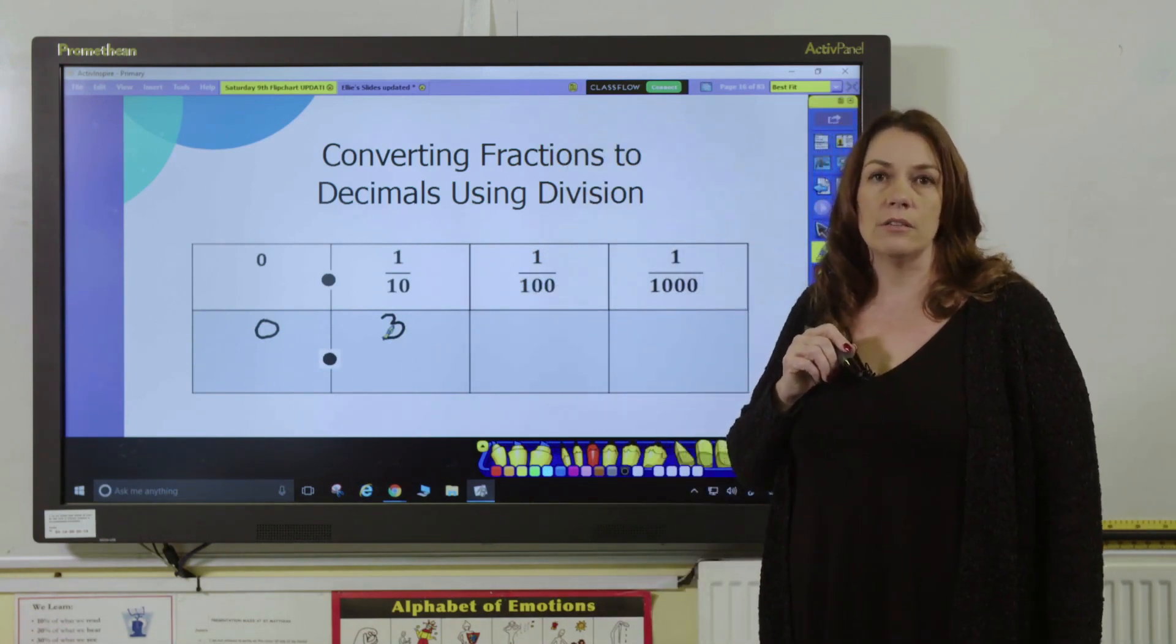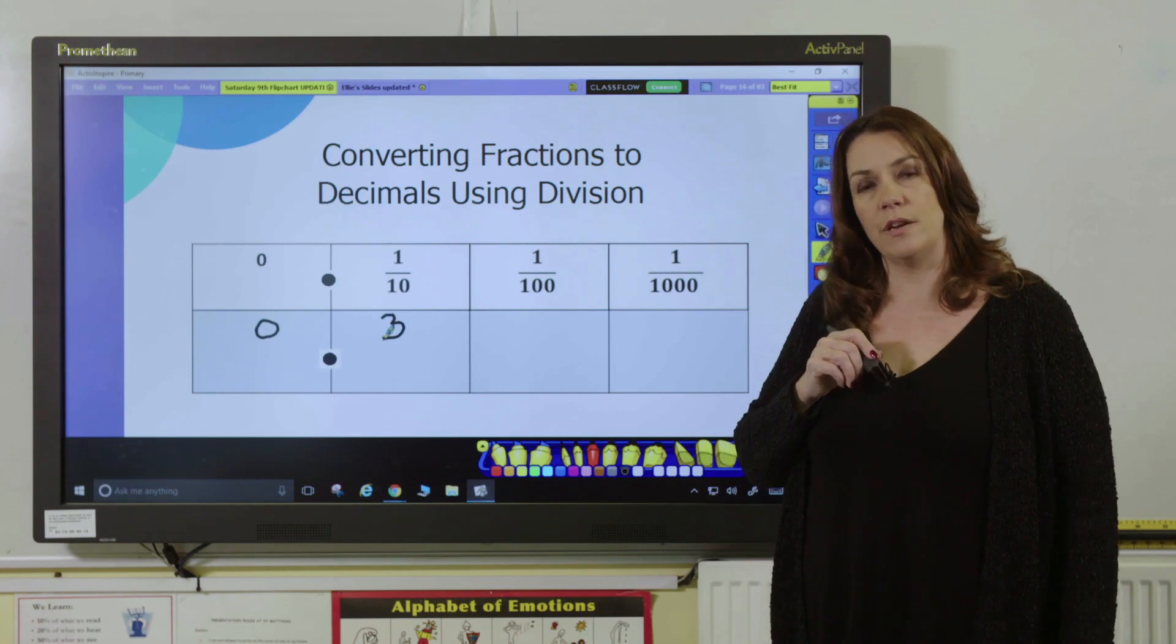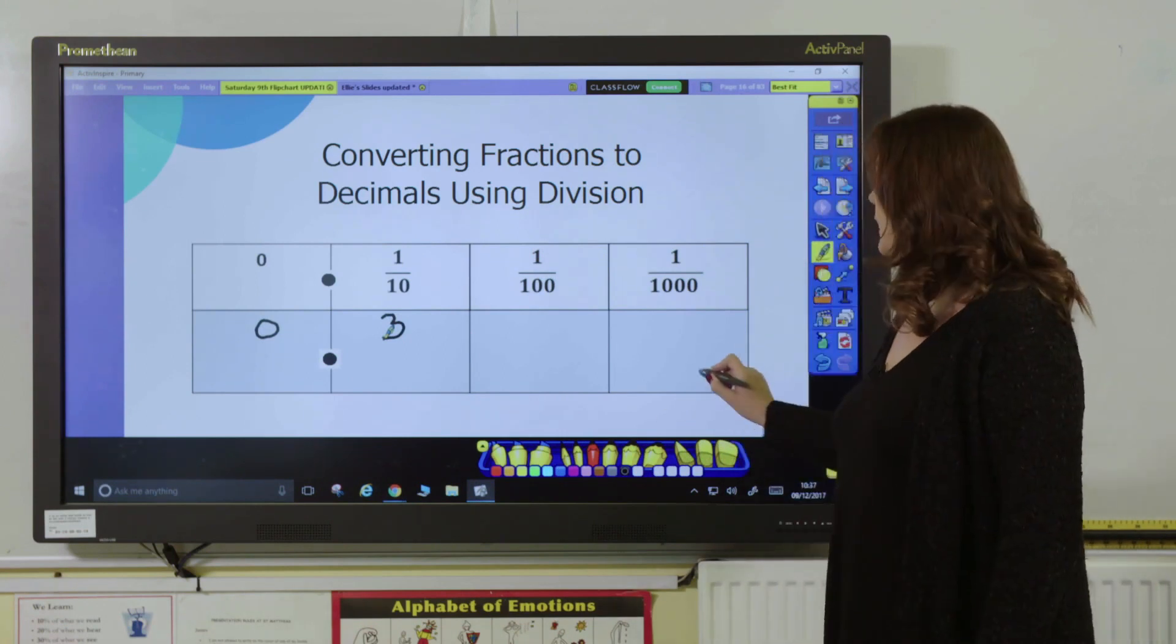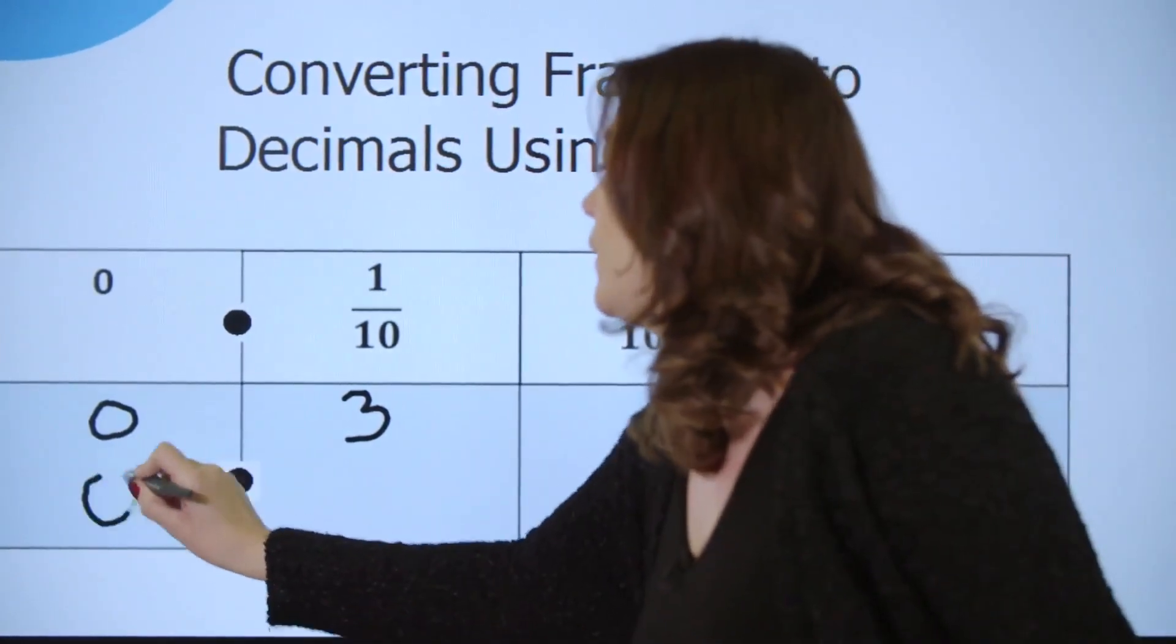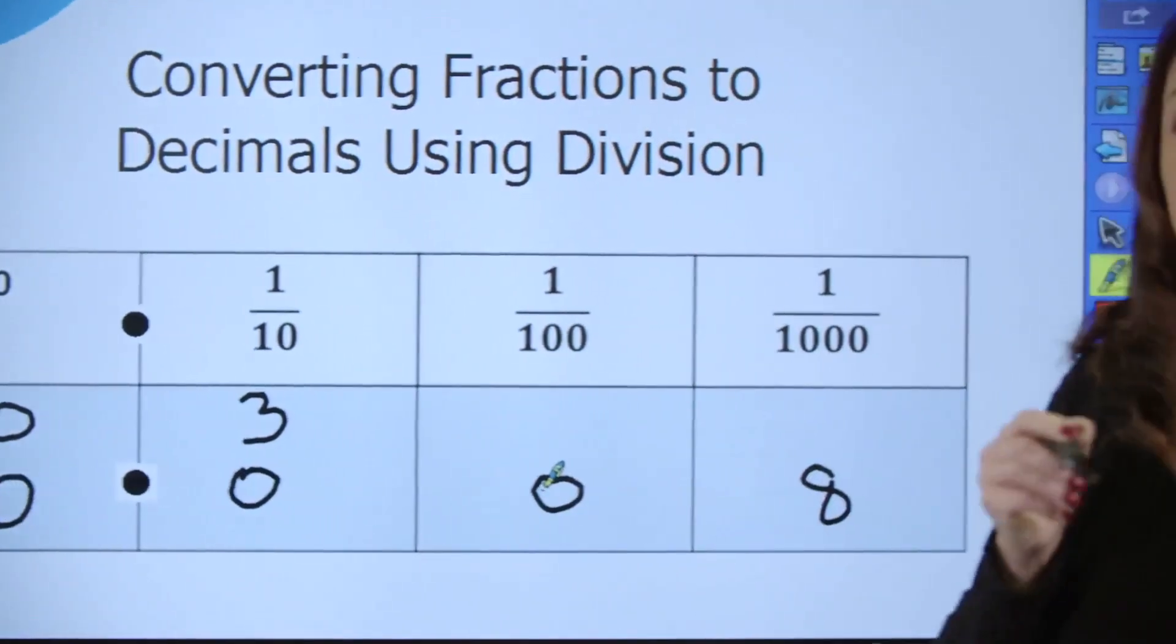Similarly, if we had a fraction such as 8/1000, they would use their knowledge of place value to know that the 8 would go in the thousandths column, giving us a decimal of 0.008.